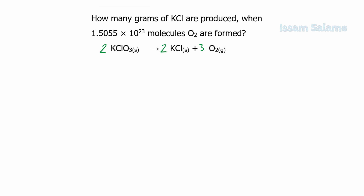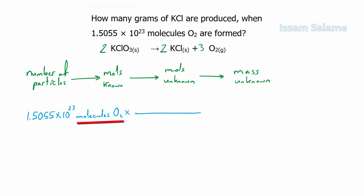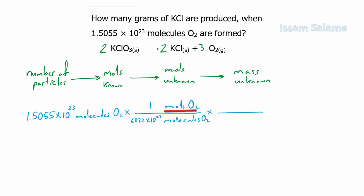The procedure is as follows: we convert the number of particles of the known quantity to moles of the known quantity using Avogadro's number, then convert moles of known to moles of unknown using the mole ratio, and finally convert moles of unknown to mass using the periodic table. We start with 1.5055 × 10²³ molecules of oxygen and multiply by a fraction putting molecules of oxygen in the denominator and moles of oxygen in the numerator — 1 next to moles and 6.022 × 10²³ next to molecules. Then we convert moles of oxygen to moles of potassium chloride.